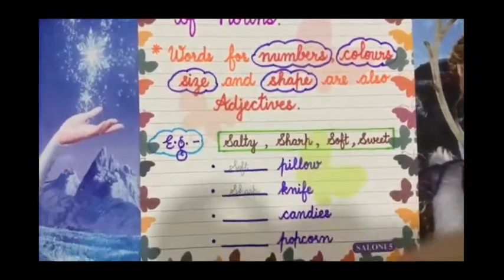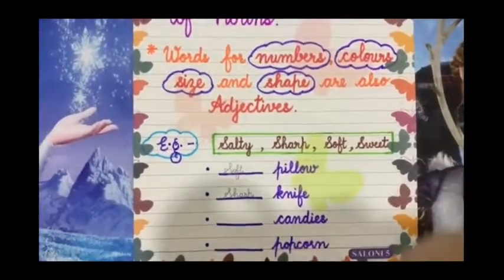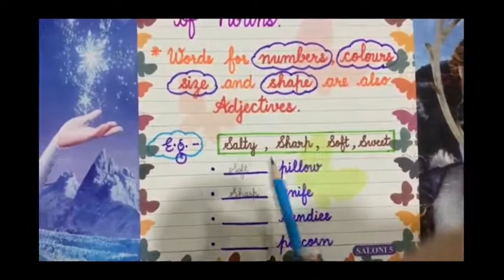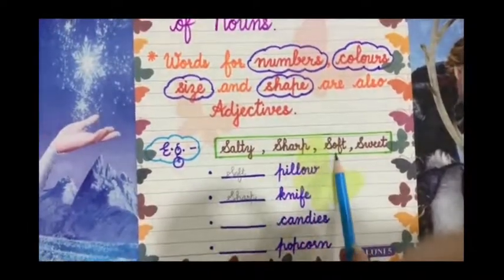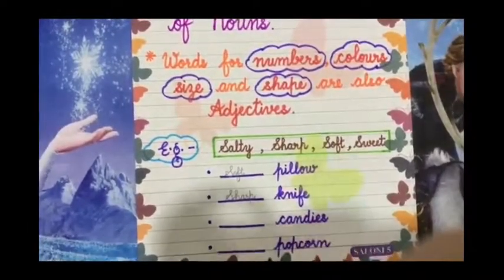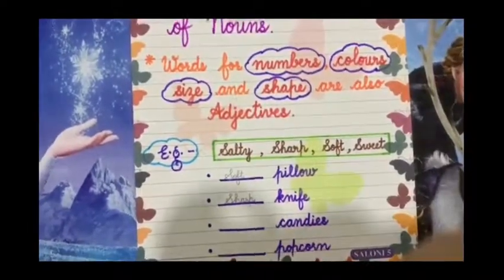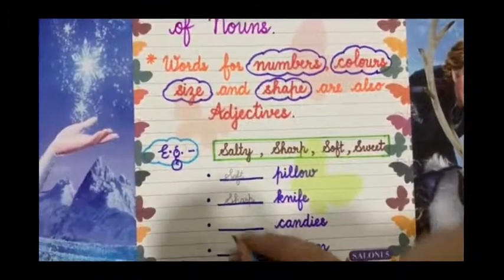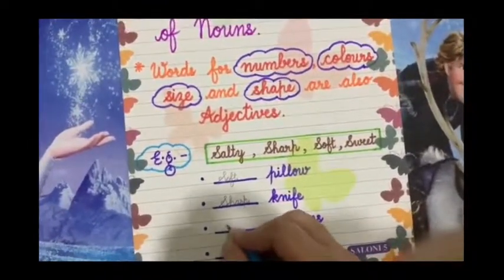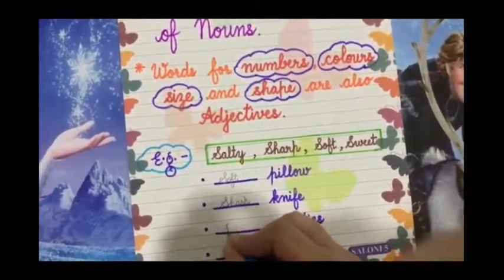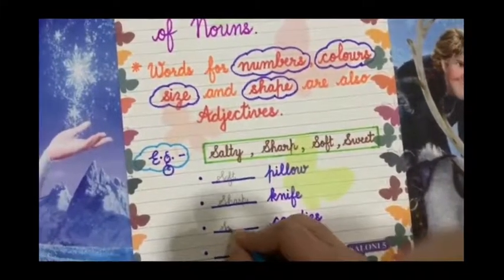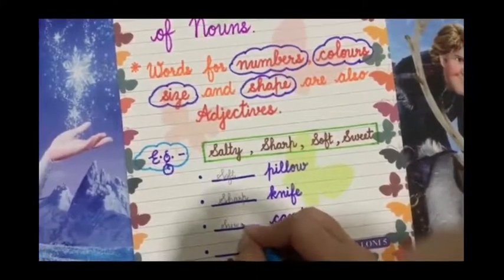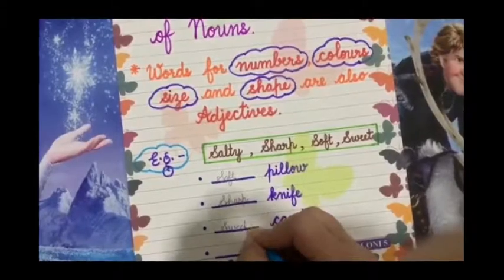And the next is candies. What kind of candies would they be? The remaining hints are salty and sweet. Candies would be sweet — yes, the correct adjective would be sweet.